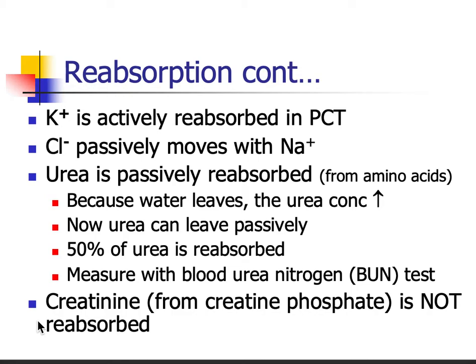Water is constantly being reabsorbed through most of the nephron — everywhere except the ascending limb of the loop of Henle. This continual water removal makes the filtrate concentration of urea higher. If you remove water, whatever's left becomes more concentrated, and that actually causes us to passively reabsorb about half of our urea. That saves energy, because we actually want to reabsorb about half of that urea.